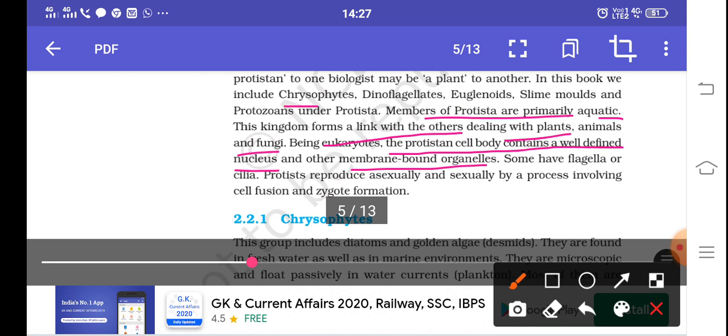They are categorized into chrysophytes, dinoflagellates, euglenoids, slime molds, and protozoans. Some of them have flagella, some have cilia. Sexual and asexual reproduction occur in both modes. They reproduce through self-fusion and zygote formation in sexual reproduction.